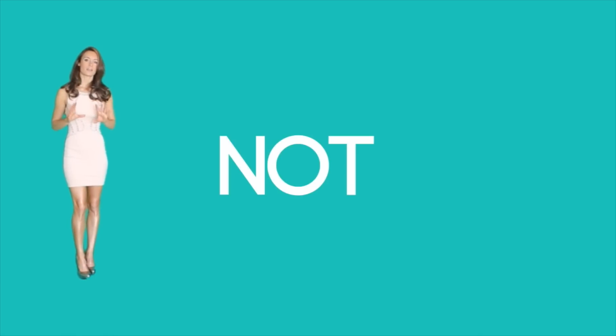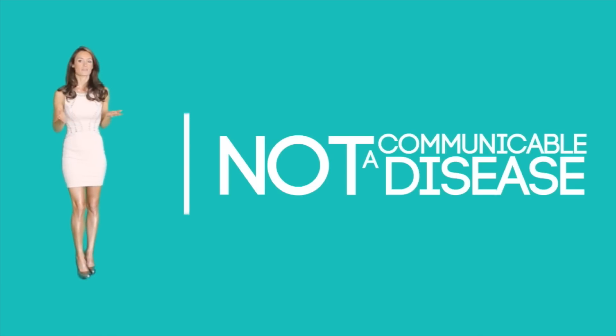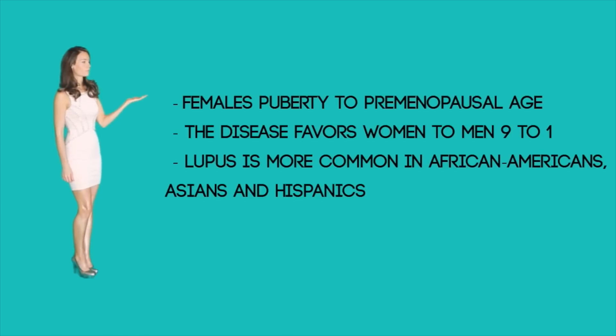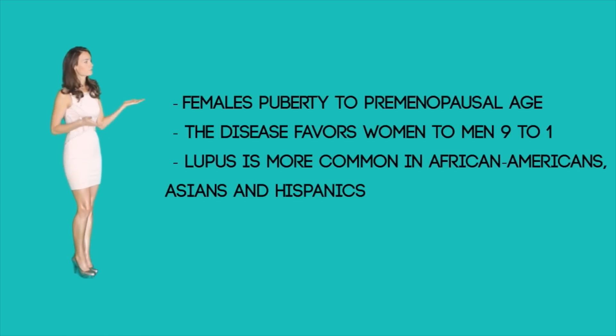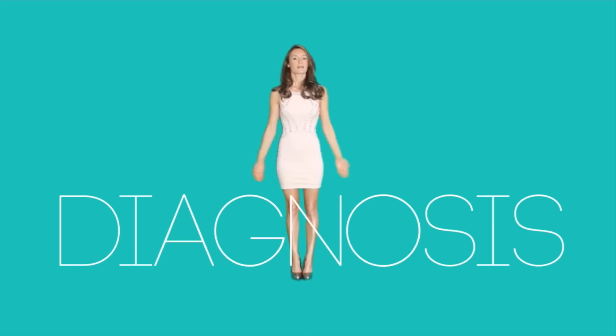There is a familial component to lupus which suggests a predisposition, but it is not a communicable disease. Risk factors include being female from puberty to premenopausal age, as the disease favors women nine to one. Lupus is also more common in individuals who are African-American, Asian, or Hispanic.